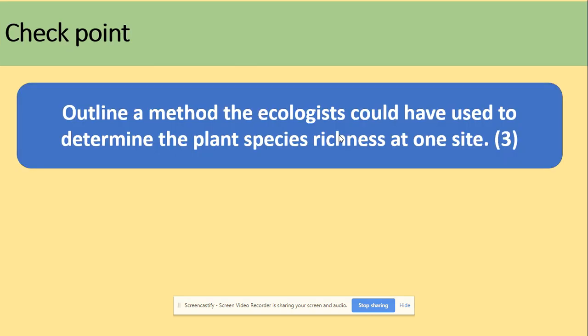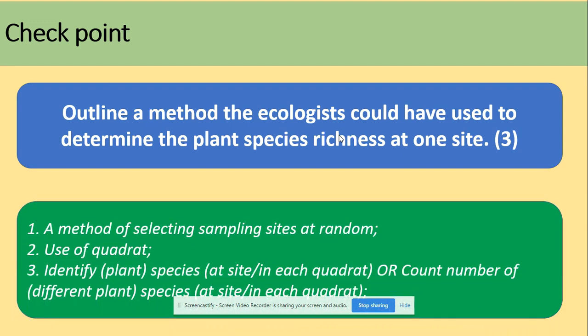Here's a question: outline the method an ecologist could use to determine plant species richness at one site. Species richness is how many different species are present. For this, you would use random sampling — generate random coordinates using a calculator or random number generator — place quadrats at those locations, and identify the plant species within them.